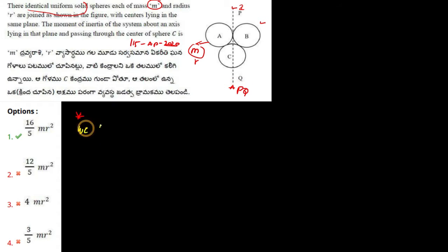Now we know that I sphere, that is the moment of inertia of a sphere, is given by 2 upon 5 M R square. This is for the axis passing through the center of the sphere. For sphere C it is equal to 2 upon 5 M R square, I C.